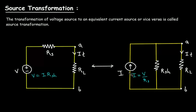We can also convert this current source into a voltage source. To do so, we use the formula V is equal to I multiplied by RSH. We multiply the value of this current by the value of this resistance to get the voltage. Then we convert this parallel resistance RSH into a series resistance RS.